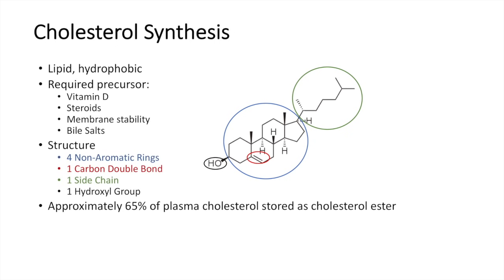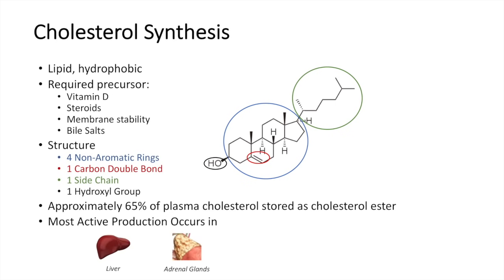Approximately 65% of plasma cholesterol is stored as cholesterol ester, and I'll get into that more later. Most cholesterol is actually produced in the liver, the adrenal glands, the intestines, and also in the gonads. Most of this is because a lot of these organs are involved in steroid production.